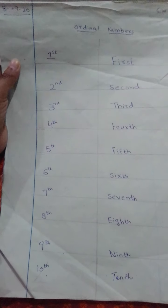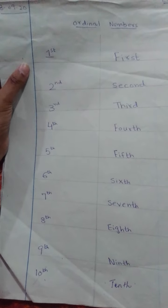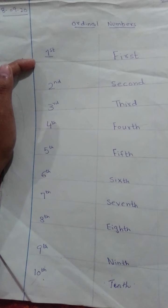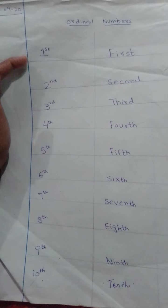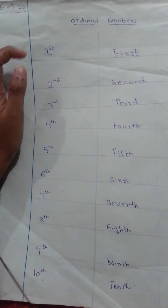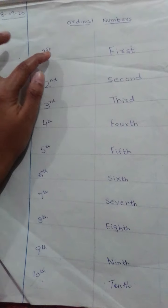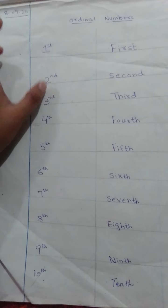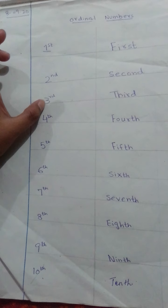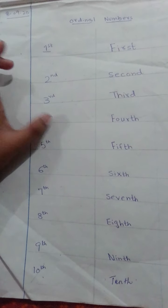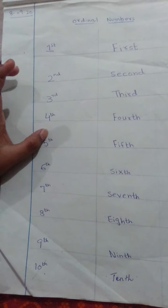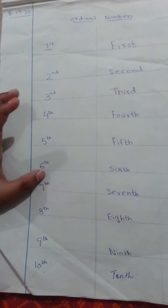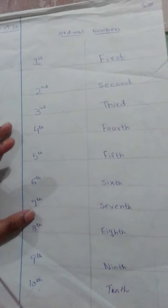First of all, you have to write the ordinal numbers. Ordinal numbers are those numbers which tell the position. So: 1st, 2nd, 3rd, 4th, 5th, 6th, 7th, 8th, 9th.